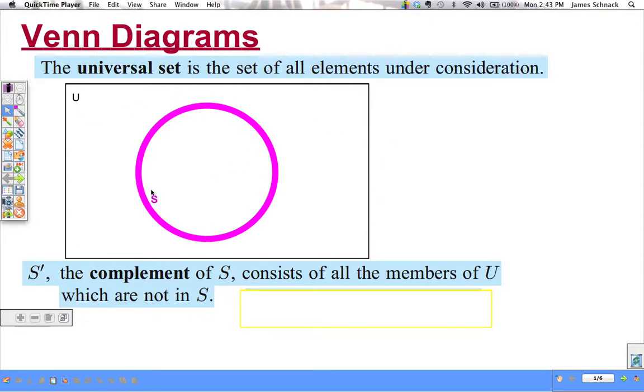A circle in a Venn diagram represents some set S that's inside of U. And S prime, S with a little apostrophe over it right here, that is denoting the complement of S. It consists of all the members of U that aren't inside S.